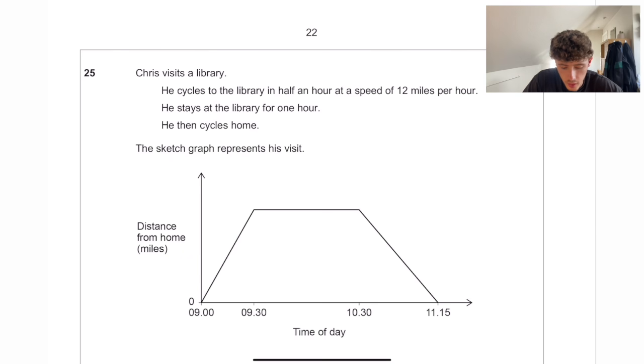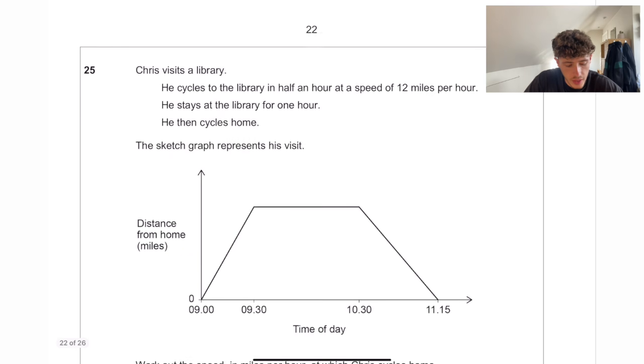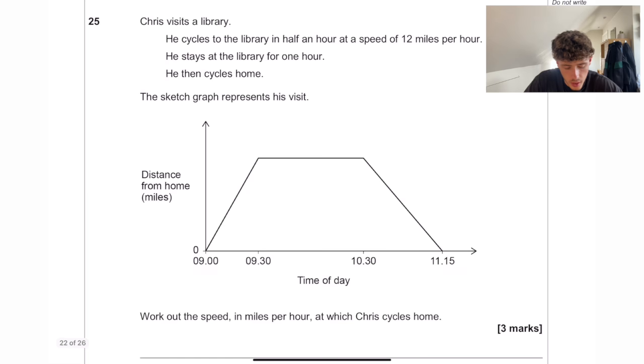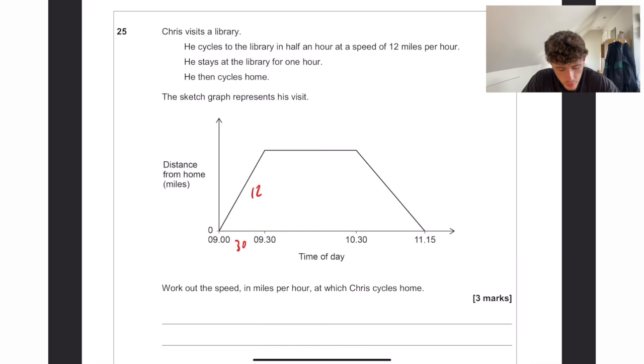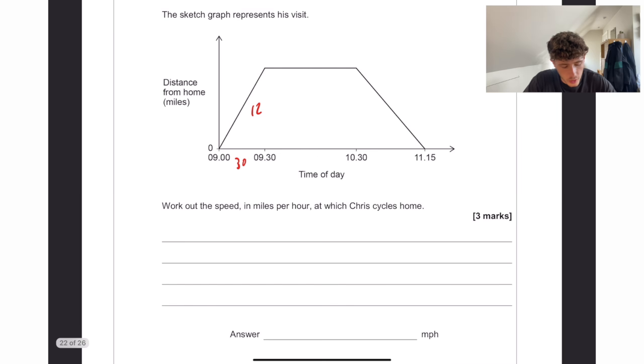Question 25. Chris visits a library. He cycles to the library in half an hour at a speed of 12 miles per hour. So he goes for half an hour at 12 miles per hour. He stays at the library for one hour, as we can see at the bottom, and then he then cycles home. Work out the speed in miles per hour at which Chris cycles home. So to get the speed, we're going to need the distance over the time.